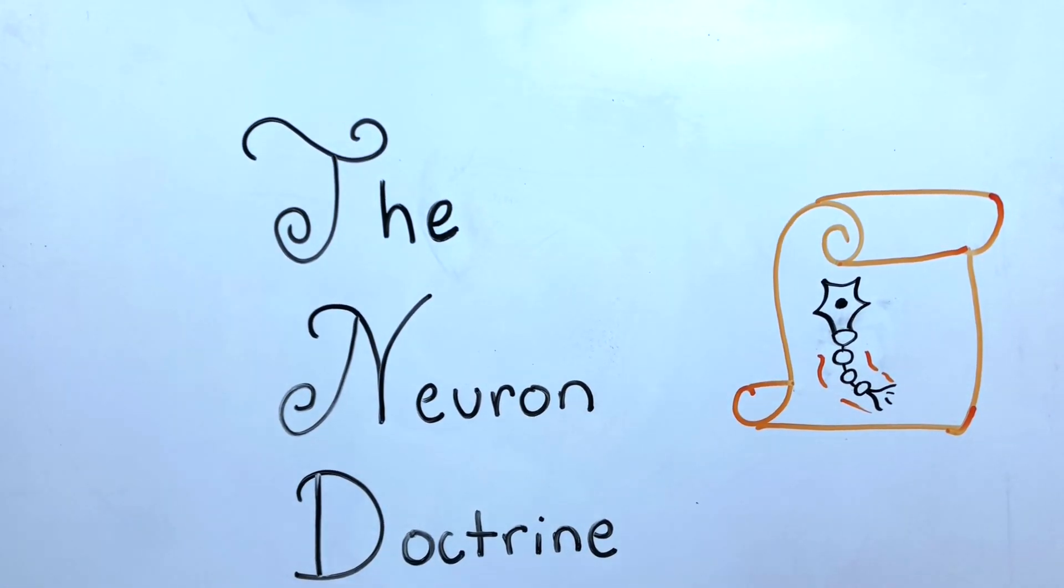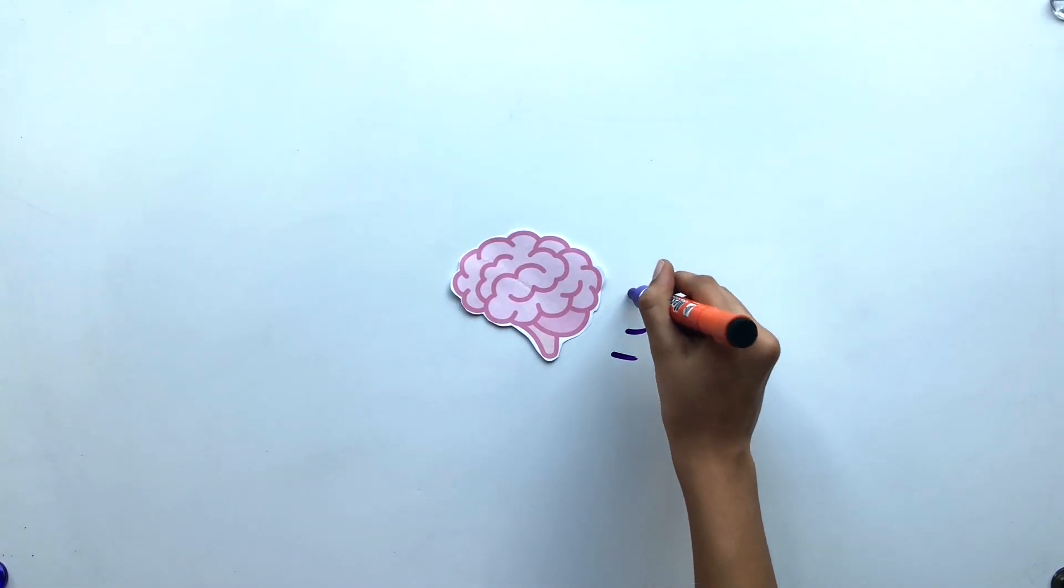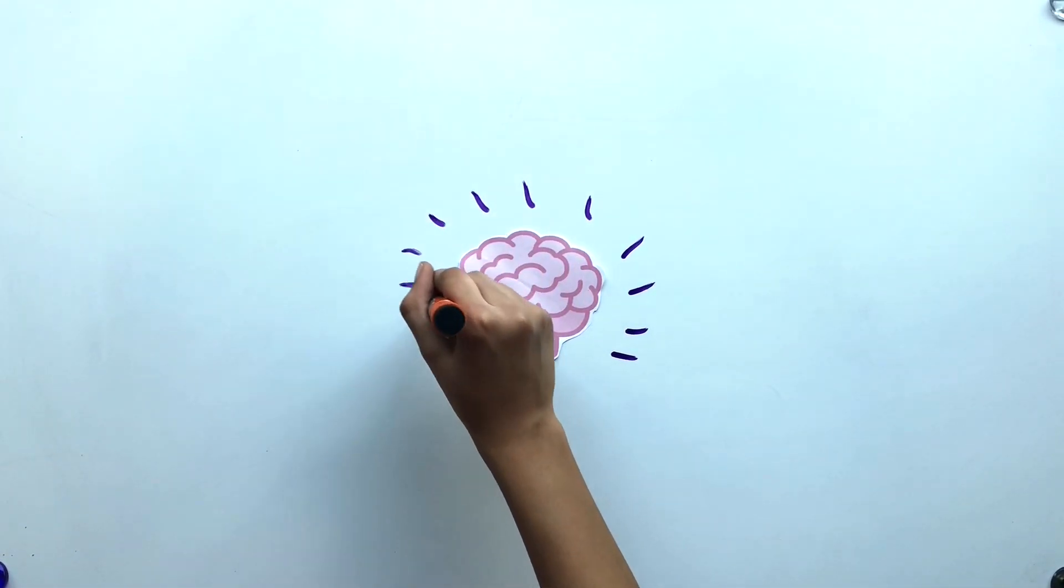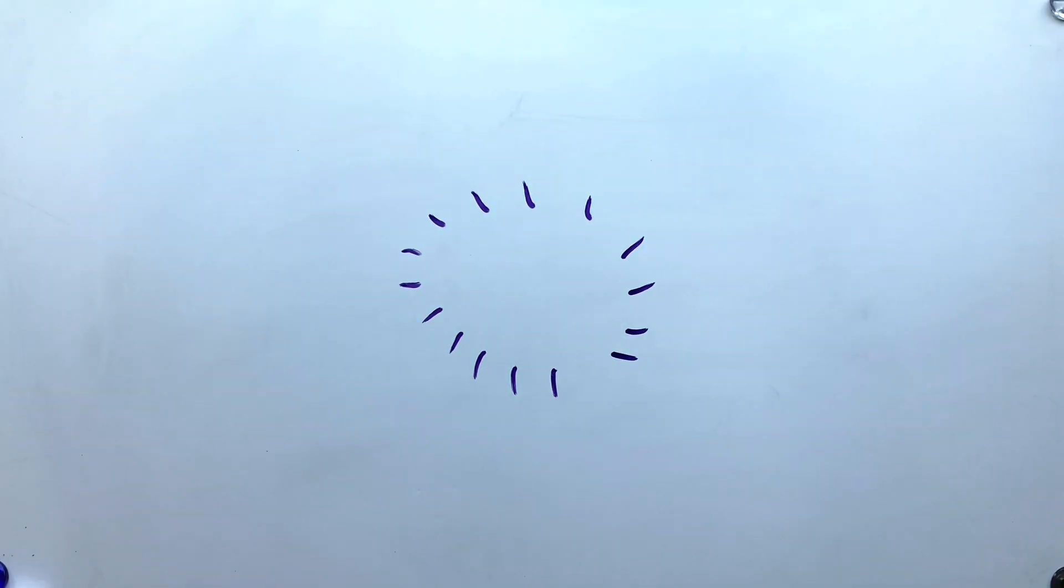The scientific evidence that followed heavily backed Cajal's neuron doctrine, propelling the idea that the neuron is the basic unit of the nervous system, which we will learn more about next week.